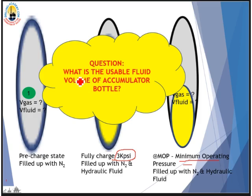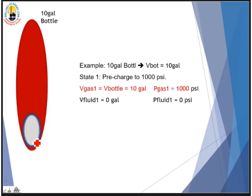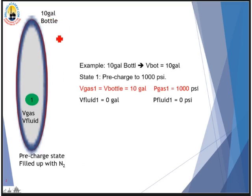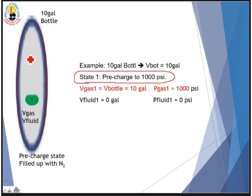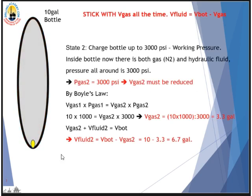At this state, the pressure and volume of both gas and fluid vary from state to state. The final question is: what is the usable fluid volume of the accumulator bottle? This example gives a 10-gallon bottle. We pre-charge the bottle with nitrogen to 1000 psi. At state one, the nitrogen fills the entire bottle volume, so the volume of nitrogen is 10 gallons at 1000 psi.